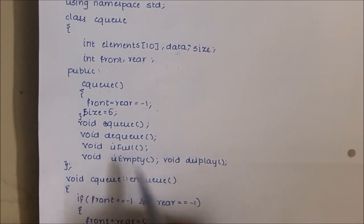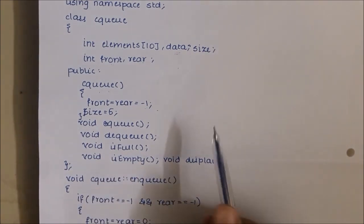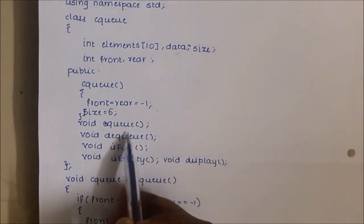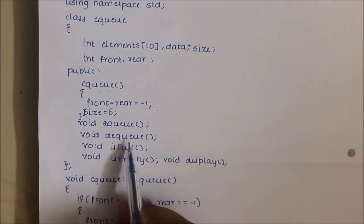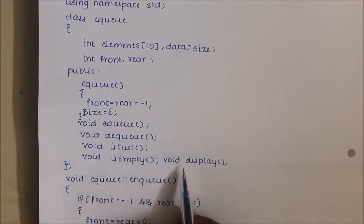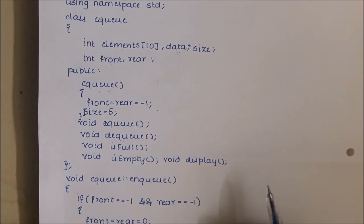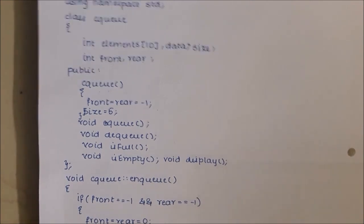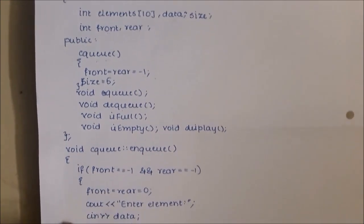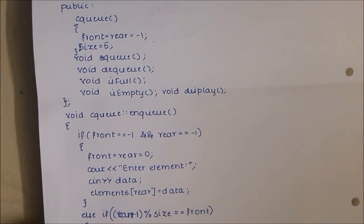These are the basic functions we perform on a circular queue: enqueue, dequeue, check if the queue is full, check if it is empty, and a display function to show the elements present in the queue. We will start with the enqueue function.